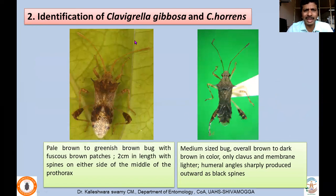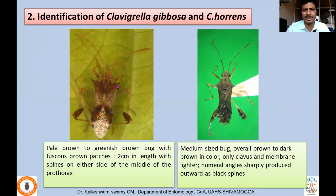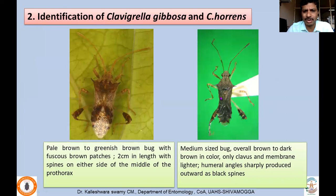The next pests belong to genus Clavigrella — Clavigrella gibbosa and Clavigrella orantes — which can be differentiated by coloration. Clavigrella gibbosa is a pale brown to greenish-brown bug with fuscous brown patches, measuring about 2 centimeters in length, with spines arising from the middle of the prothorax. Clavigrella orantes is comparatively smaller, overall brown to dark brown, with membranes lighter, and humeral angles sharply produced outward with small black spines.